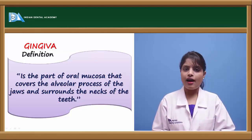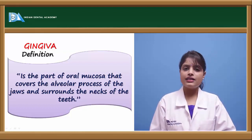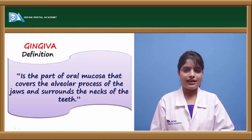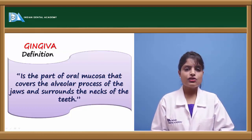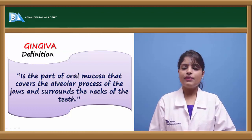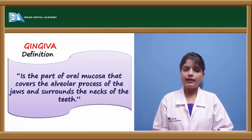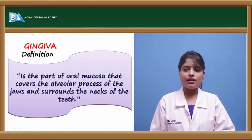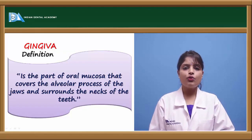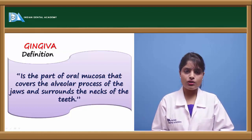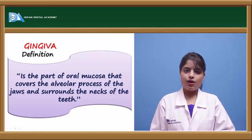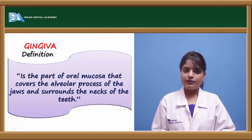The oral mucous membrane can either be keratinized or non-keratinized. Gingiva is a part of the keratinized oral mucous membrane, and can be defined as the part of oral mucosa which covers the alveolar process of the jaws and surrounds the neck of the teeth from the periphery.